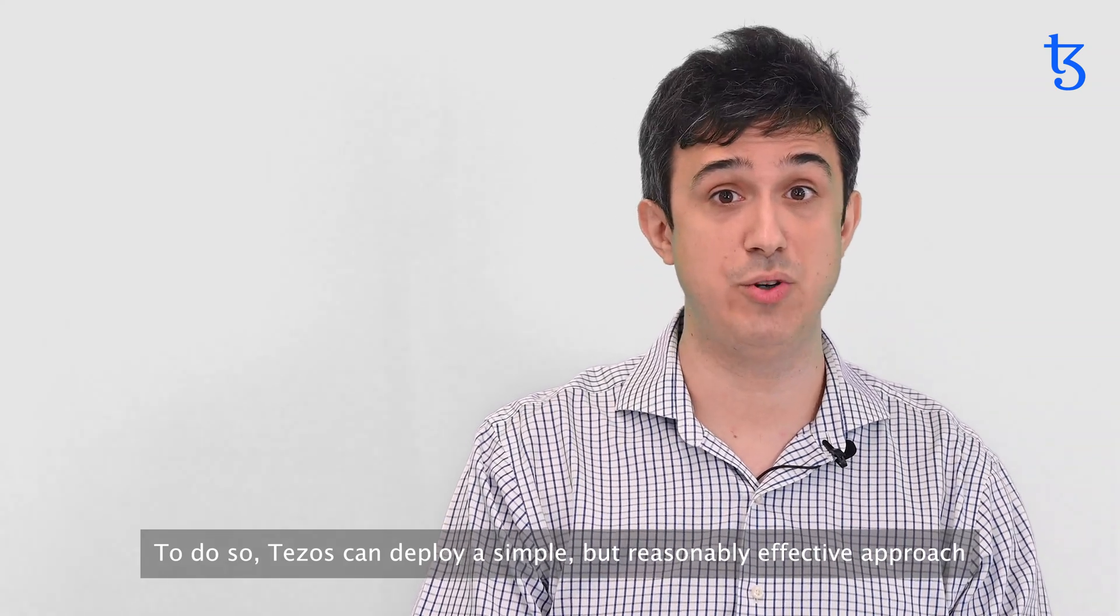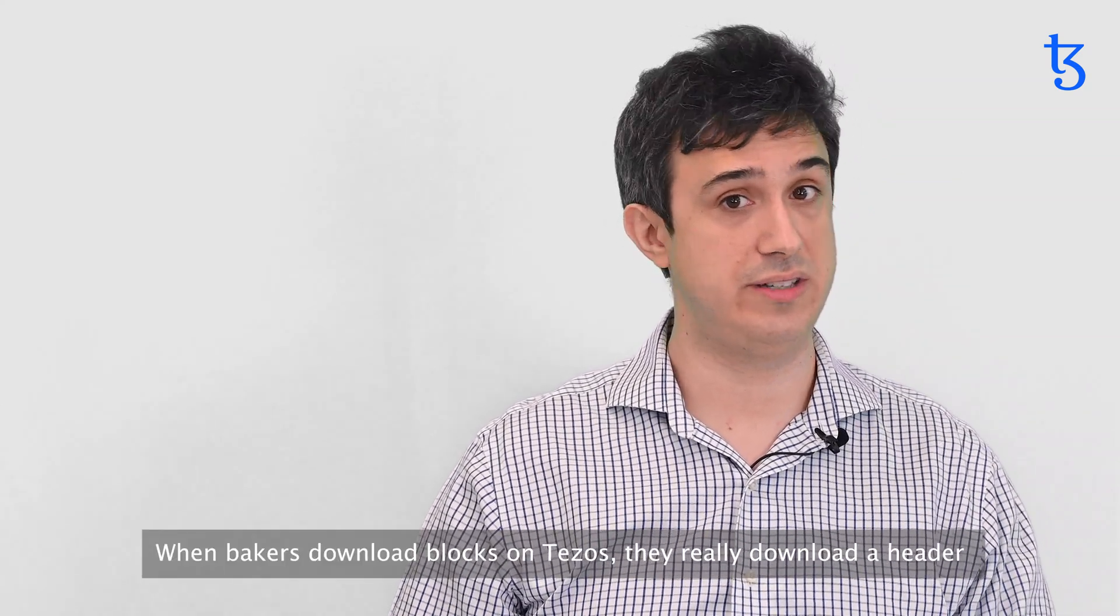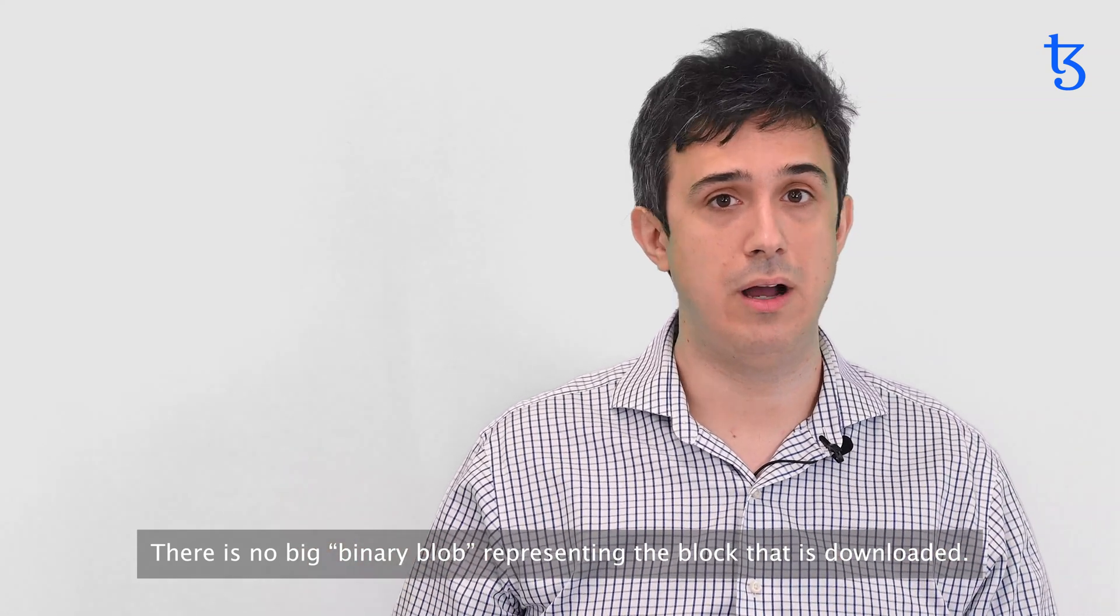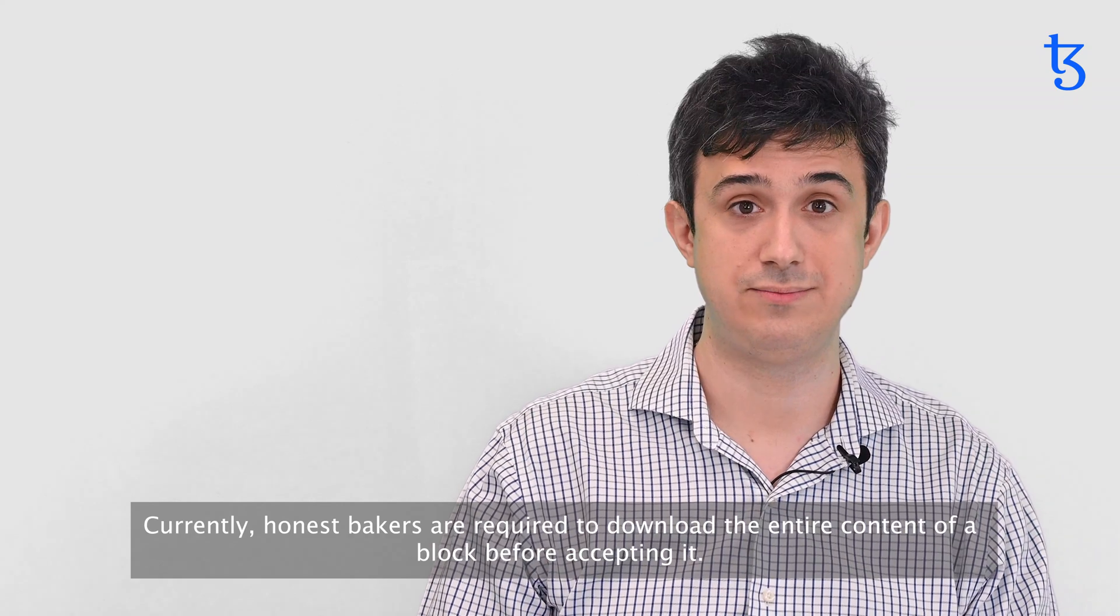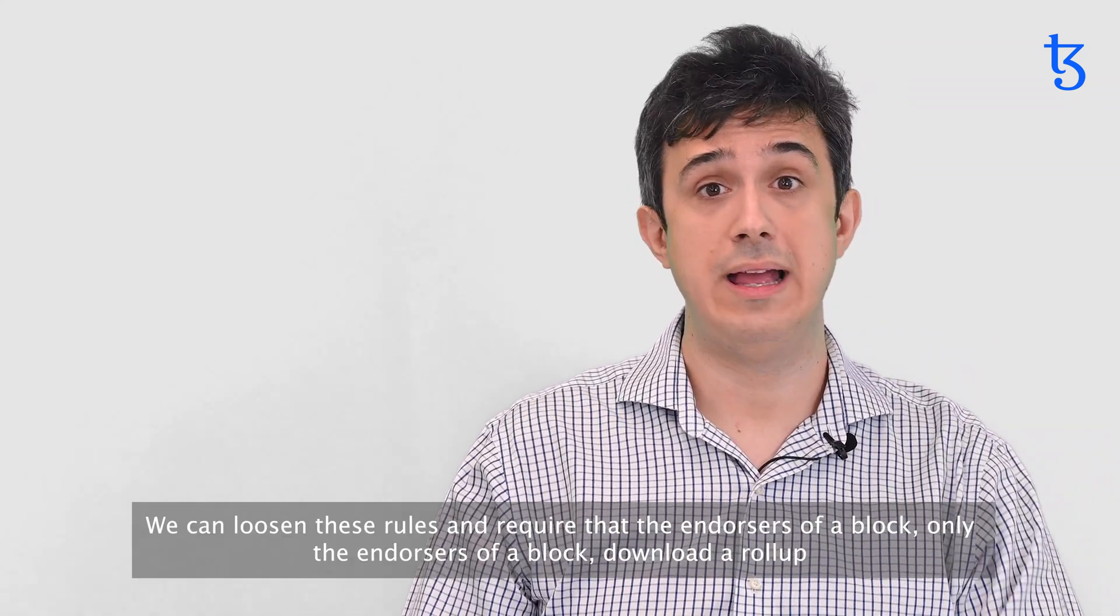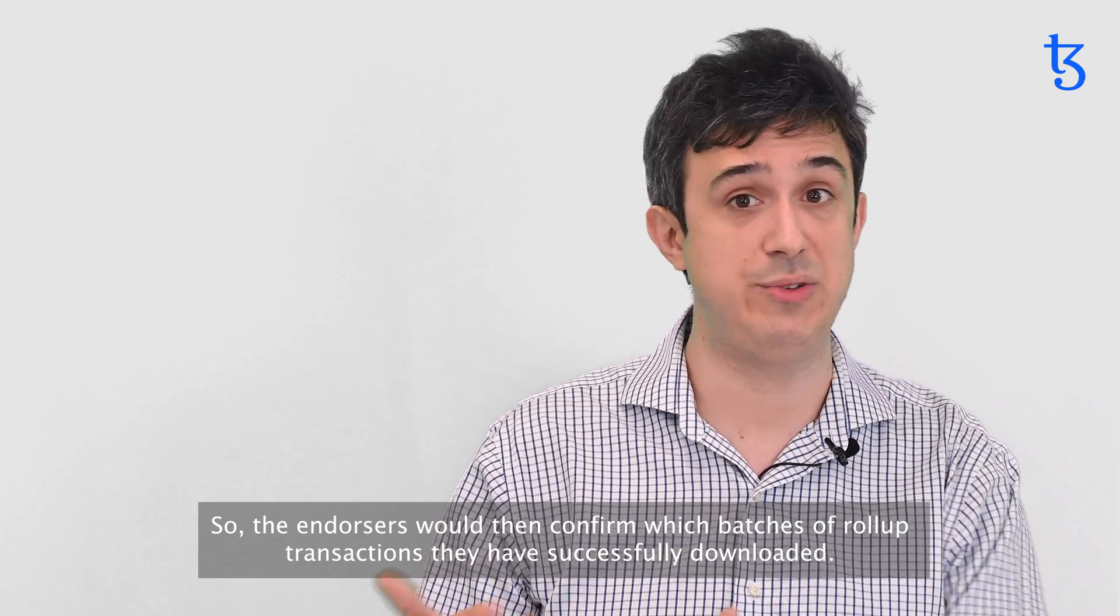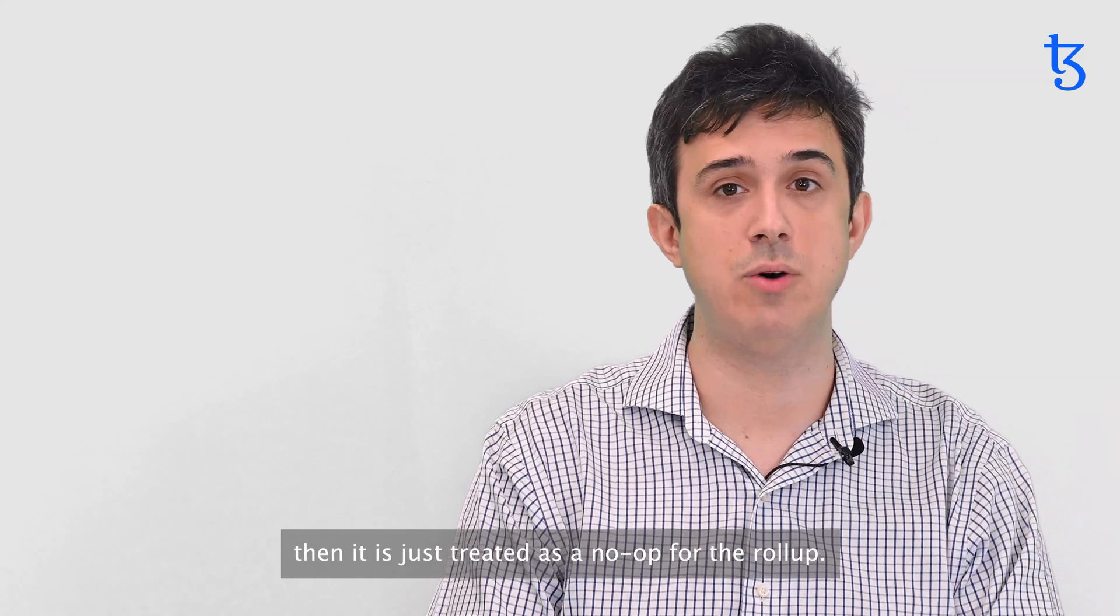Let's first dive into the simple strategy. When bakers download blocks on Tezos, they really download a header and a set of associated transactions that the header points to. There is no big binary block representing the block that is downloaded. Currently, honest bakers are required to download the entire content of a block before accepting it. We can loosen these rules and require that the endorsers of a block, only the endorsers of a block, download rollup or a random subset of the rollup. So the endorsers would then confirm which batches of rollup transactions they have successfully downloaded. And if there is no indication that a batch was successfully downloaded with enough validators, then it's just treated as a no-op for the rollup.